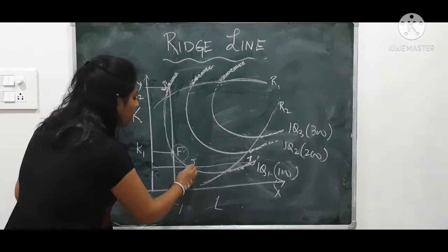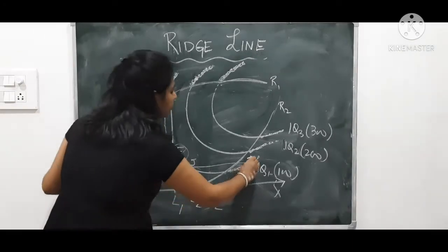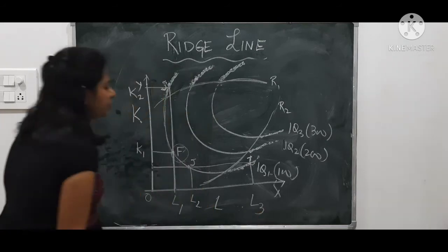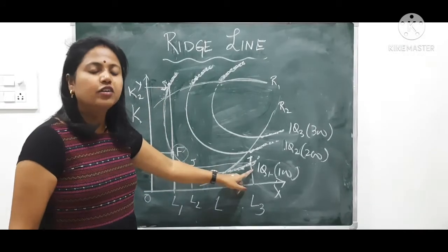But J requires less labour, but T requires a lot of labour. That means J is more efficient than T.